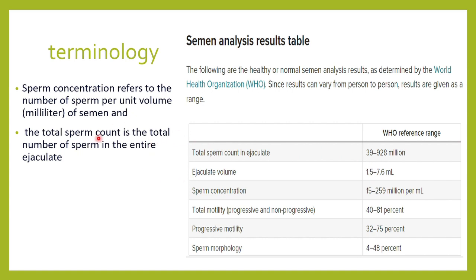The total sperm count is the total number of sperms in the ejaculate — whatever the total ejaculate produced, how many sperms are in it. The total sperm count in the ejaculate must be a minimum of 39 million; the maximum can be up to 928 million.